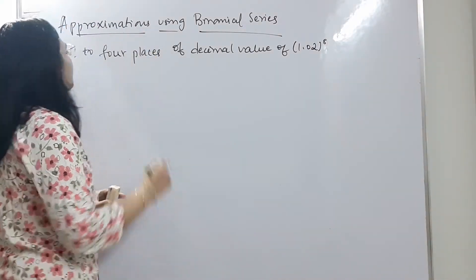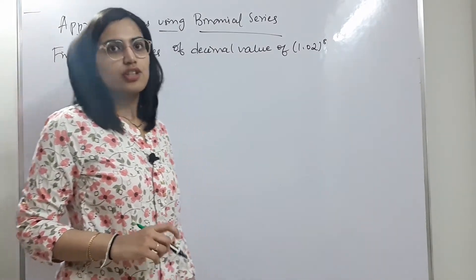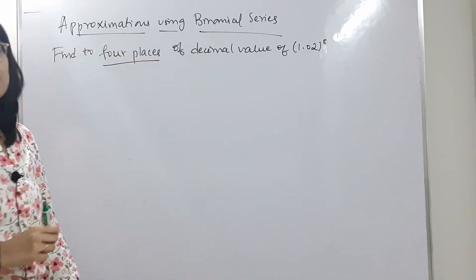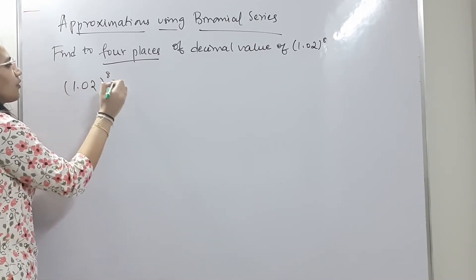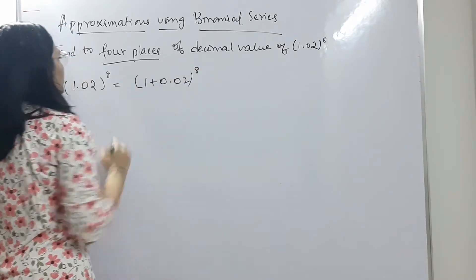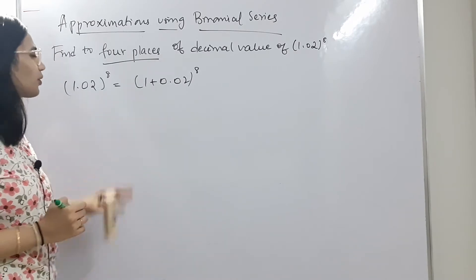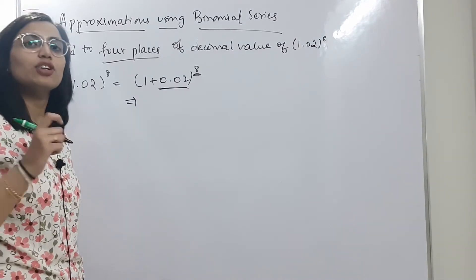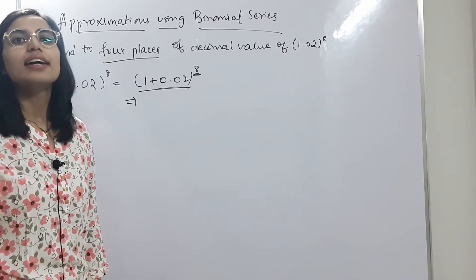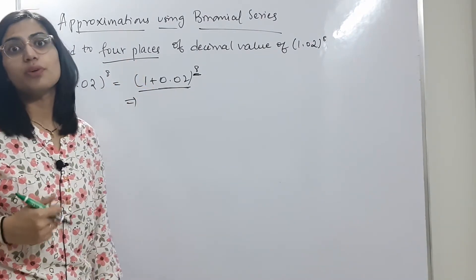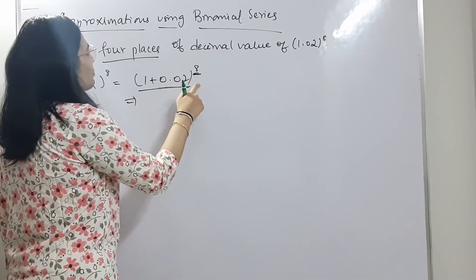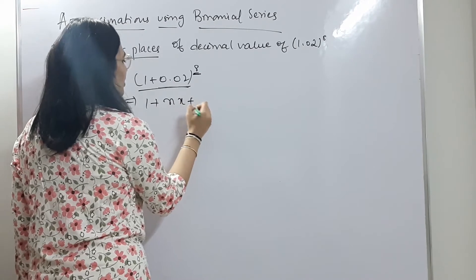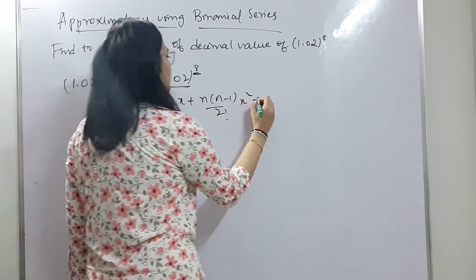Now let's see how to do that. Here we need to find, to four decimal places, the value of 1.02 to the power of 8 using binomial series. We can write 1.02 as 1 + 0.02, so this becomes (1 + 0.02)^8. This is in the form of (1+x)^n, so we can apply binomial series to get the approximate value of 1.02^8.